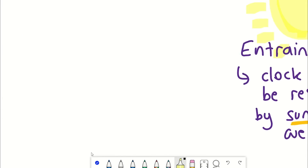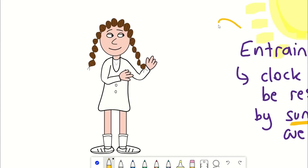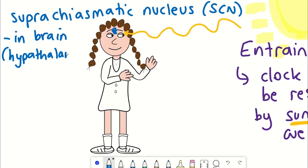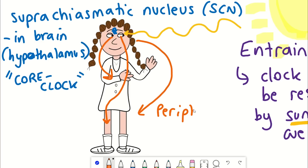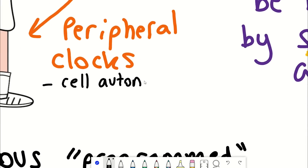The central clock, which can be entrained by changes in sunlight, is found in the hypothalamus in a region known as the suprachiasmatic nucleus, or SCN. This central clock synchronizes the peripheral clocks found in all of our other tissues. However, these peripheral clocks are also cell autonomous — they can run these rhythms without signals from the SCN.